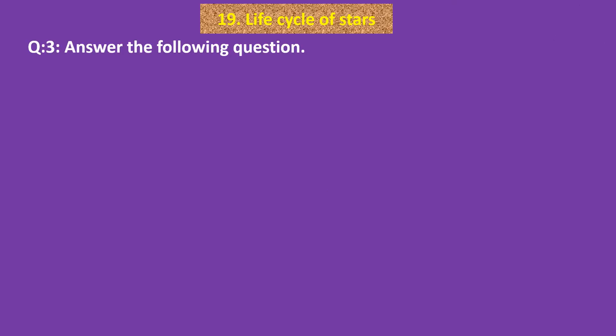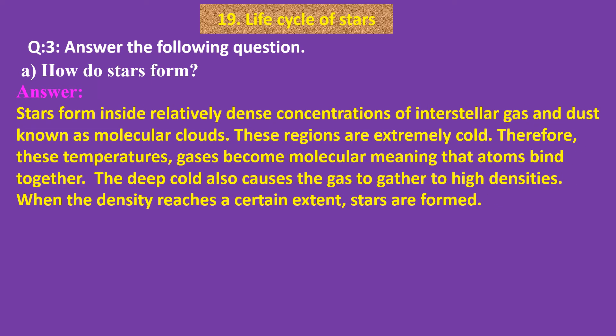Question number 3: Answer the following questions. A. How do stars form? Answer: Stars form inside relatively dense concentrations of interstellar gas and dust known as molecular clouds. These regions are extremely cold. Therefore, at these temperatures, gases become molecular, meaning that atoms bind together. The deep cold also causes the gas to gather to high densities. When the density reaches a certain extent, stars are formed.